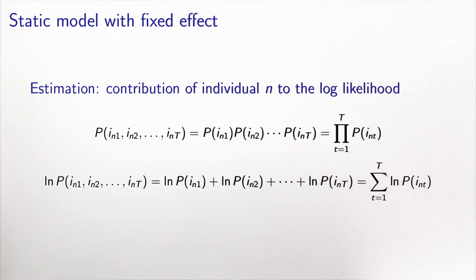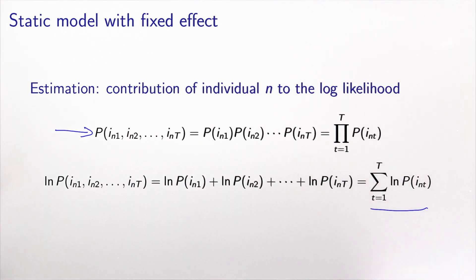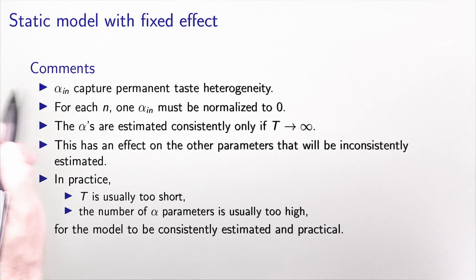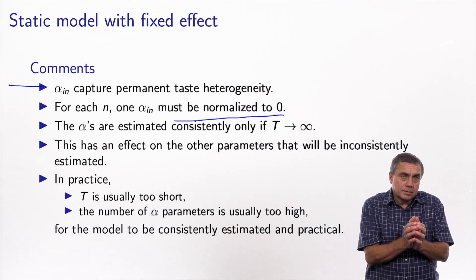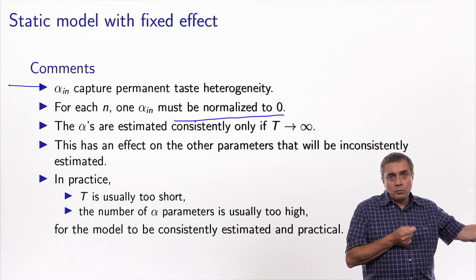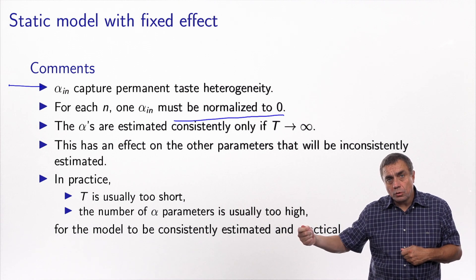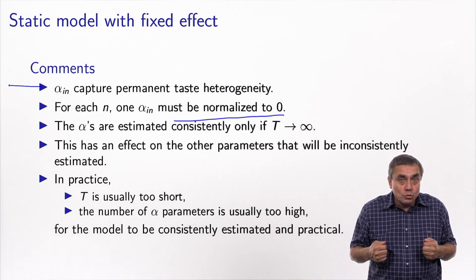In the static model with fixed effect, because the epsilon primes are independent, the probability of the trajectory is the product of the probability of each choice, and the log-likelihood is the sum of the logs. However, these extra parameters capture permanent taste heterogeneity and act like alternative-specific constants, so one must be normalized to zero. To estimate them precisely, you need many observations per individual — specifically, capital T must increase toward infinity for consistent estimation.